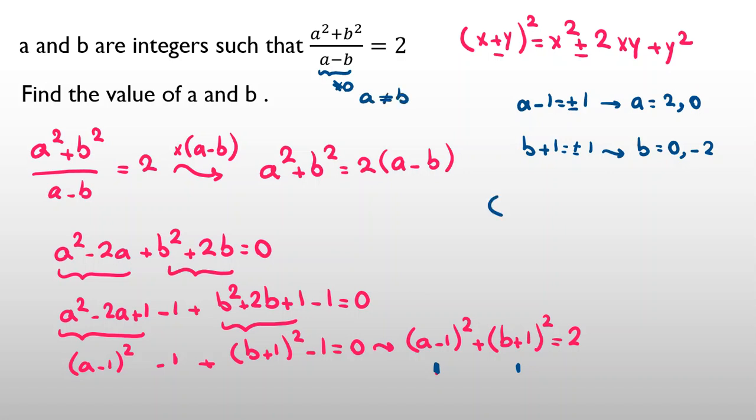If I want to write the cases for a and b, it can be (2, 0), (2, -2), (0, 0) impossible because they are equal, (0, -2). So we found these three answers.